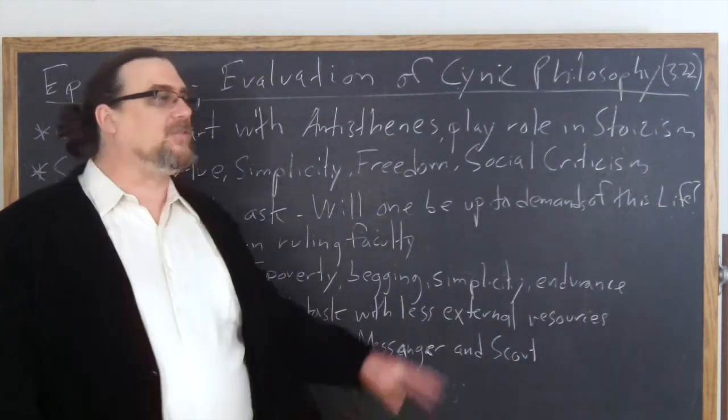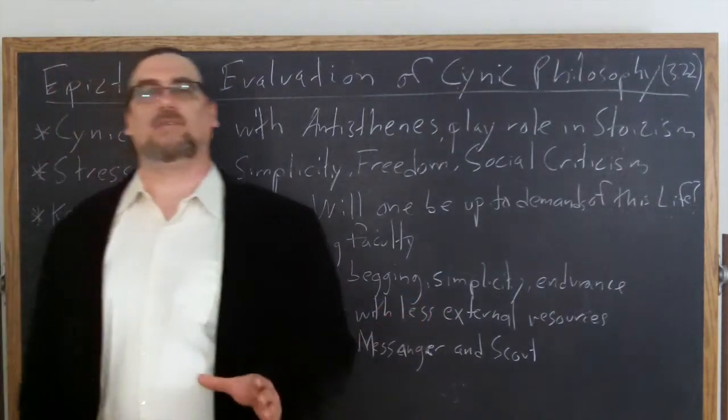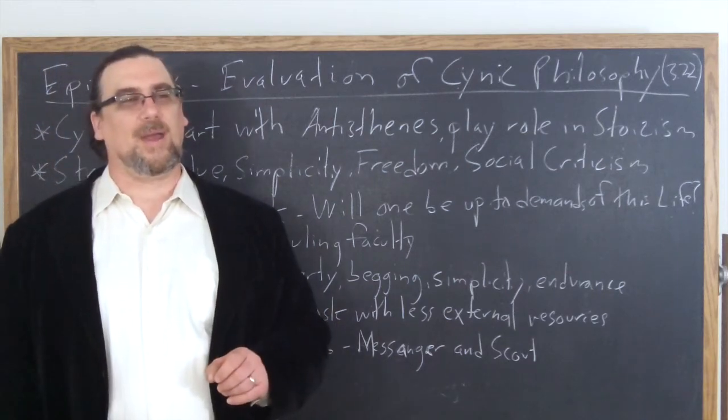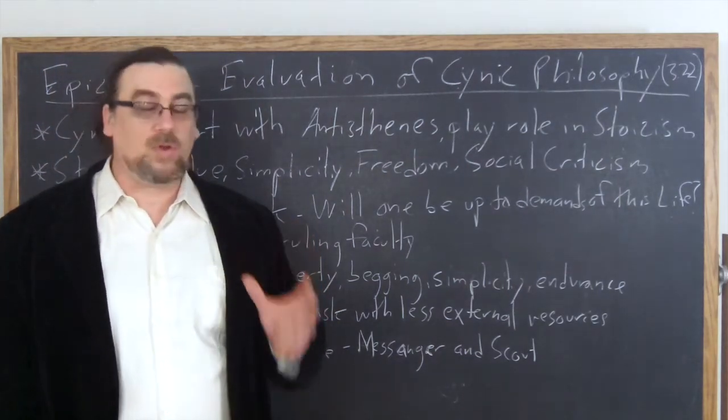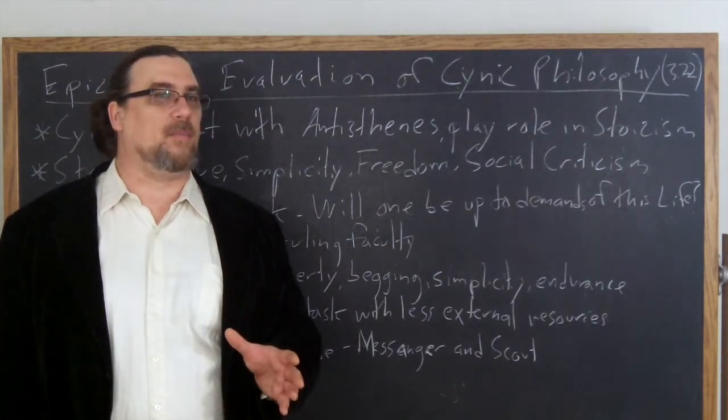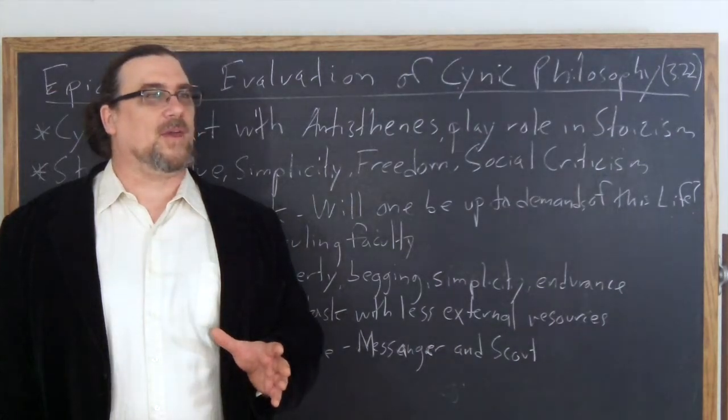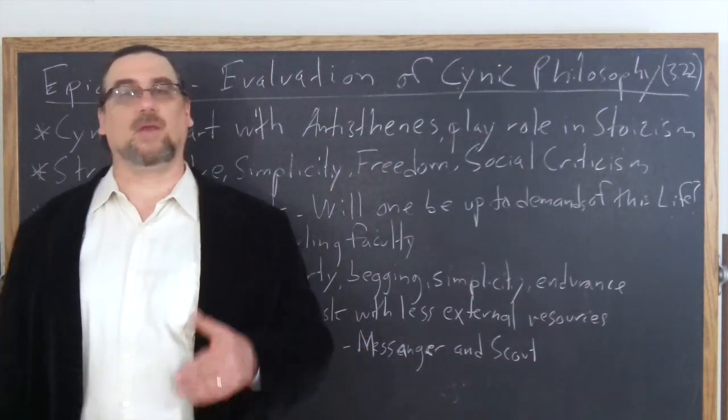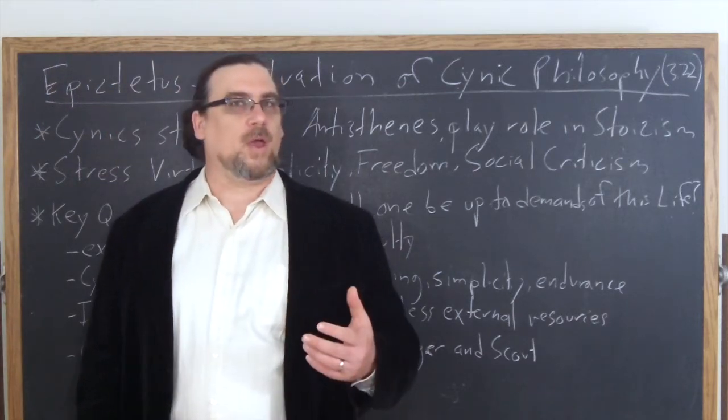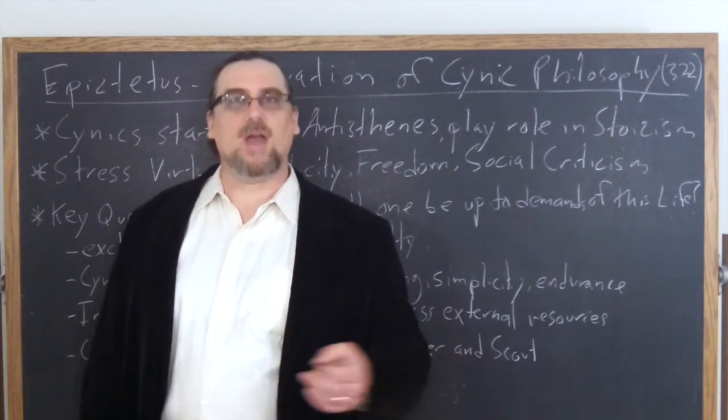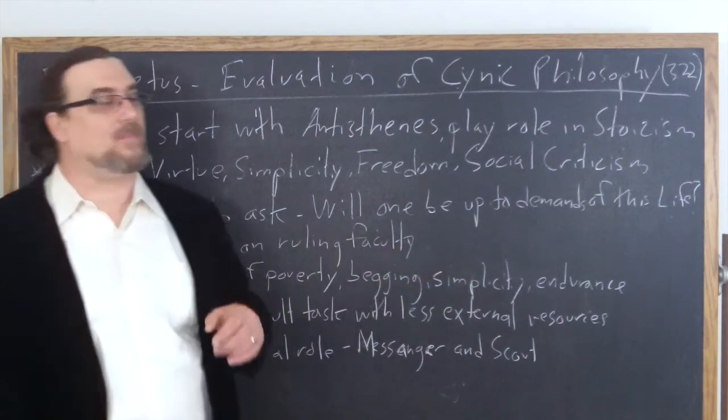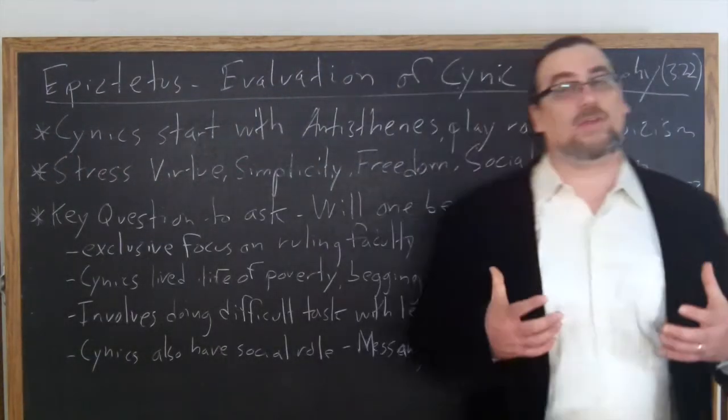As Epictetus points out, a cynic had really better have his or her act together. There were female cynics, by the way. There was even a husband-wife team at one point. They really better have their act together because if there's anything that's not morally pure about them, if there's anything that involves some hypocrisy, it is going to show up because they're constantly in the public sphere. And they're in the public sphere without the protection of influential friends or money or being able to retreat into their house or anything like that. So Epictetus says you've got to really think this through.